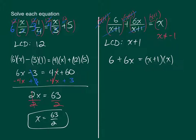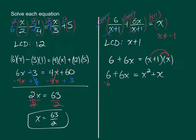Now we have to distribute this and create a quadratic equation. So this will be 6 plus 6X equals X squared plus X. My inclination is to subtract 6 from both sides and subtract 6X from both sides, so that we can still have a positive X squared and hopefully be able to factor.